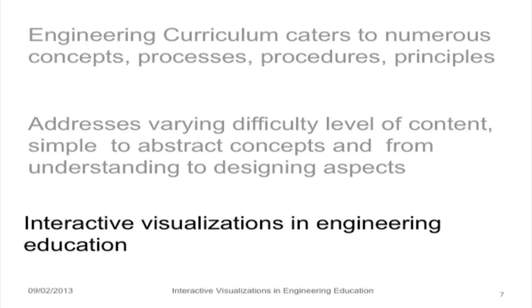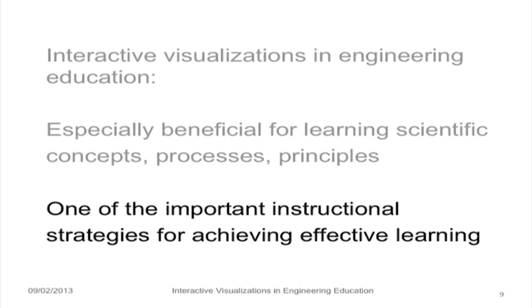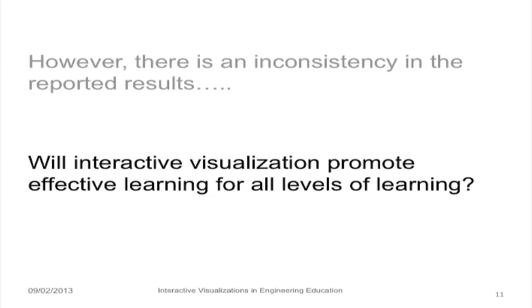Interactive visualizations in engineering education have proven to be very influential. They help students understand things they are not able to see — unseen phenomena or concepts which are really abstract in nature. It is a proven fact that interactive visualizations offer better learning in these scenarios, especially when learning scientific concepts, processes, and principles, intensive chemical processes, chemical reactions, or the molecular nature of the subject. No wonder this is being adopted as an important instructional strategy for achieving effective learning. However, there is an inconsistency in the reported results — not every topic from engineering curriculum has resulted in positive learning benefits as far as interactive visualizations are concerned, and this is what has motivated me to take up this research.